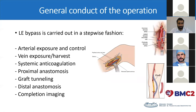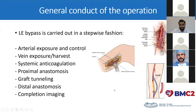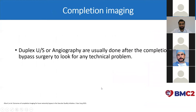This is a summary of the general conduct of the operation. We usually start with the arterial exposure, then expose and harvest the vein. We systematically anticoagulate the patient, perform the proximal anastomosis, tunnel the graft, and then perform the distal anastomosis. Finally, we perform completion imaging, which could be either duplex ultrasonography or angiography, to look for any technical problems.